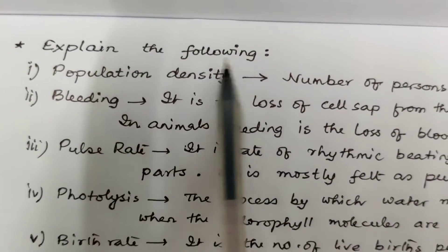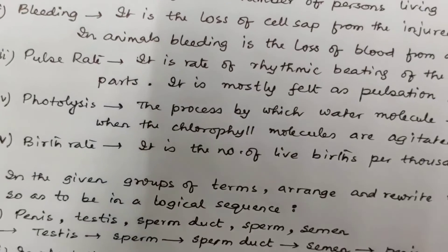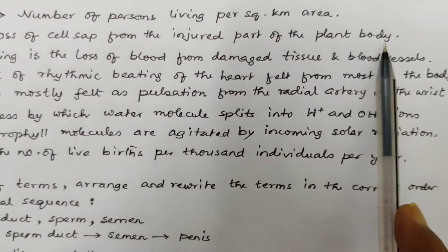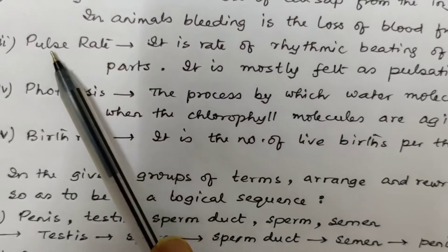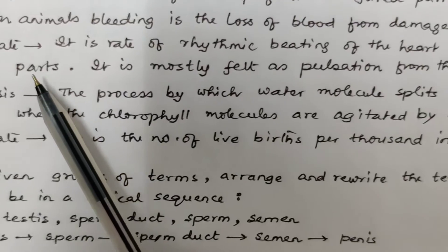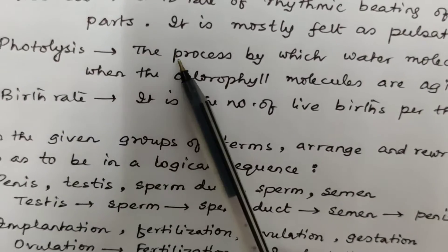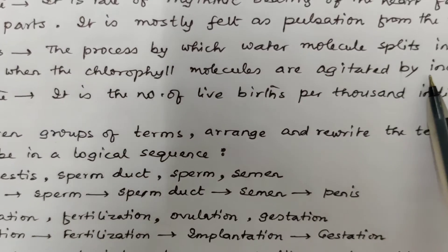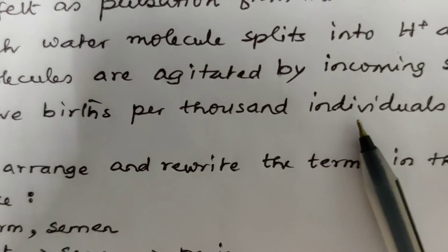Explain the following terms. Population density: the number of persons living per square kilometer area. Bleeding: in plants it is the loss of cell sap from the injured part; in animals it is the loss of blood from damaged tissue and blood vessels. Pulse rate: the rate of rhythmic beating of the heart felt from most of the body, mostly felt as pulsation from the radial artery of the wrist. Photolysis: the process by which water molecules split into hydrogen and oxygen ions when chlorophyll molecules are agitated by incoming solar radiation. Birth rate: the number of live births per thousand individuals per year.